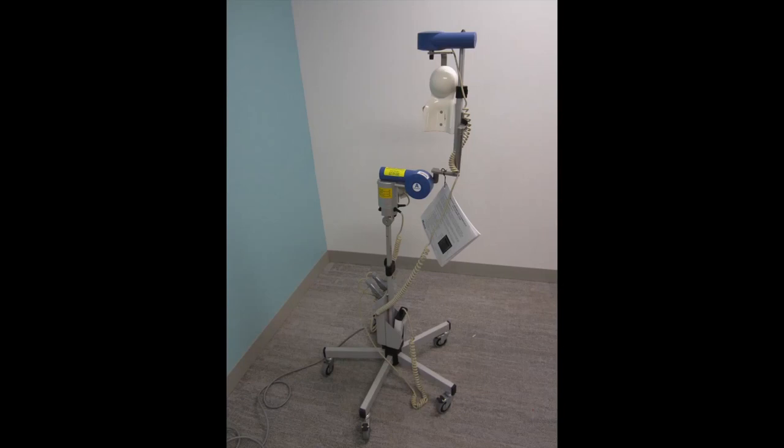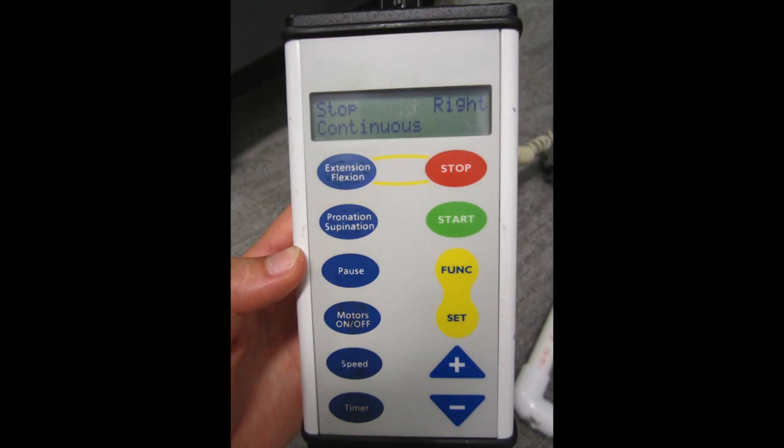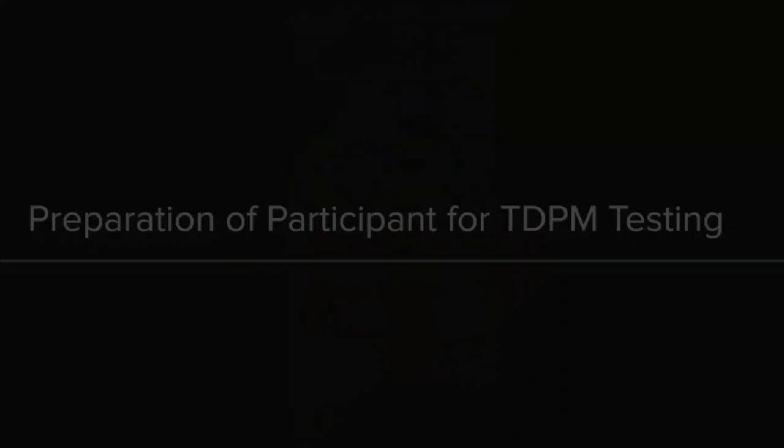Turn on the continuous passive motion machine and activate extension flexion mode. Program the CPM machine to move through 90 to 130 degrees of elbow extension at a speed of 0.23 degrees per second.